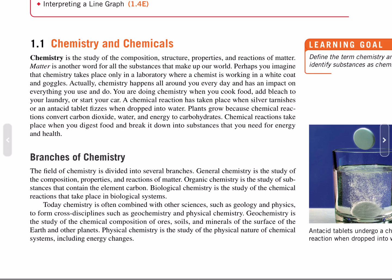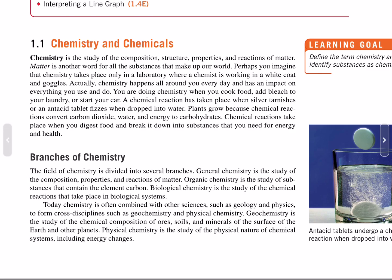Today, chemistry is often combined with other sciences, such as geology and physics, to form cross-disciplines such as geochemistry and physical chemistry. Geochemistry is the study of the chemical compositions of ores, soils, and minerals on the surface of the Earth and other planets. Physical chemistry is the study of the physical nature of chemical systems, including energy changes.